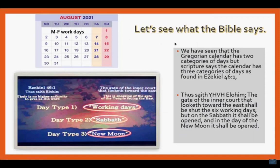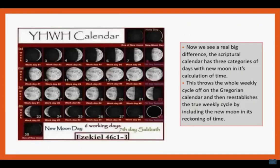Thus saith Yahweh Elohim: 'The gates of the inner court that looketh to the east shall be shut the six working days' — that is one kind of day. 'But on the Sabbath it shall be opened' — that is a second kind of day. 'And in the day of the new moon it shall be opened' — there is the third type of day. So the scriptural calendar has three categories of days, with the new moon included in its calculation of time, and this throws the whole weekly cycle off under the Gregorian calendar, then reestablishes the true weekly cycle by including the new moon in its reckoning of time.